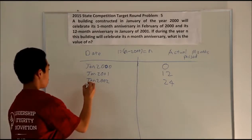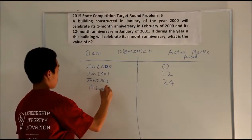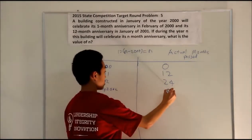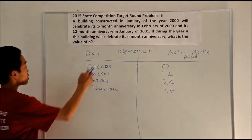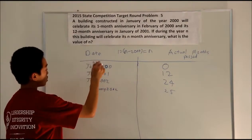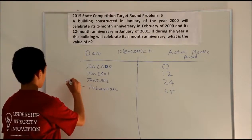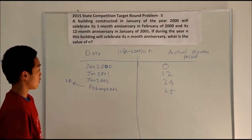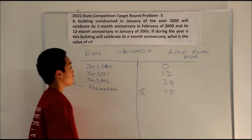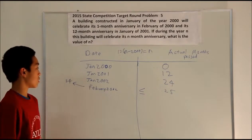However, when the date is not in January — for example, February 2002 — the actual number of months passed is 25. But when you use the equation, 2002 minus 2000 is 2, times 12 equals 24. So 24 is less than 25. This means the equation is less than or equal to N: equal when it's January, and less than when it's February through December.